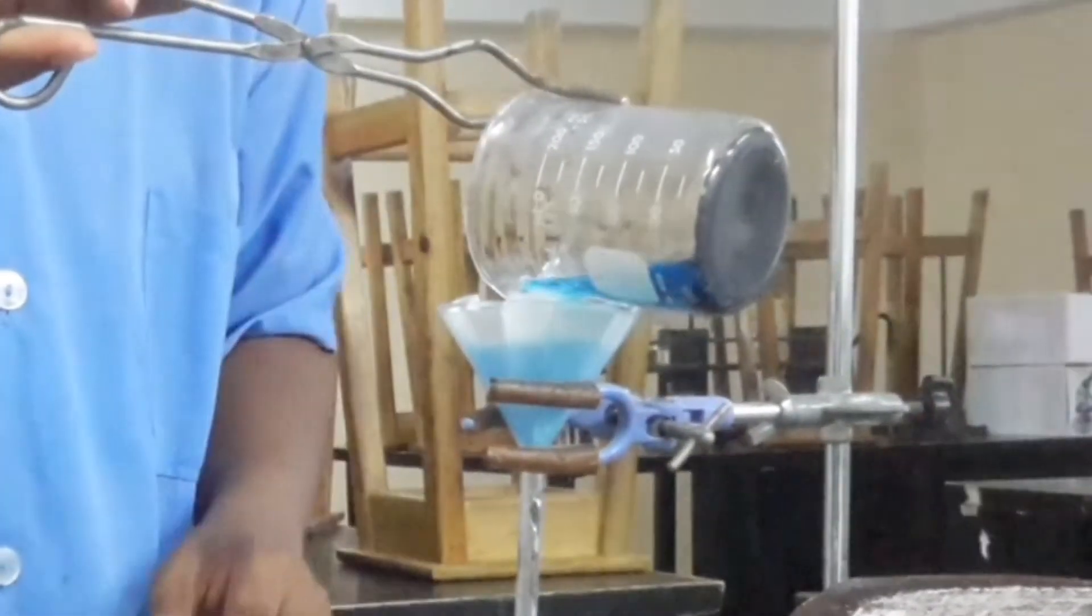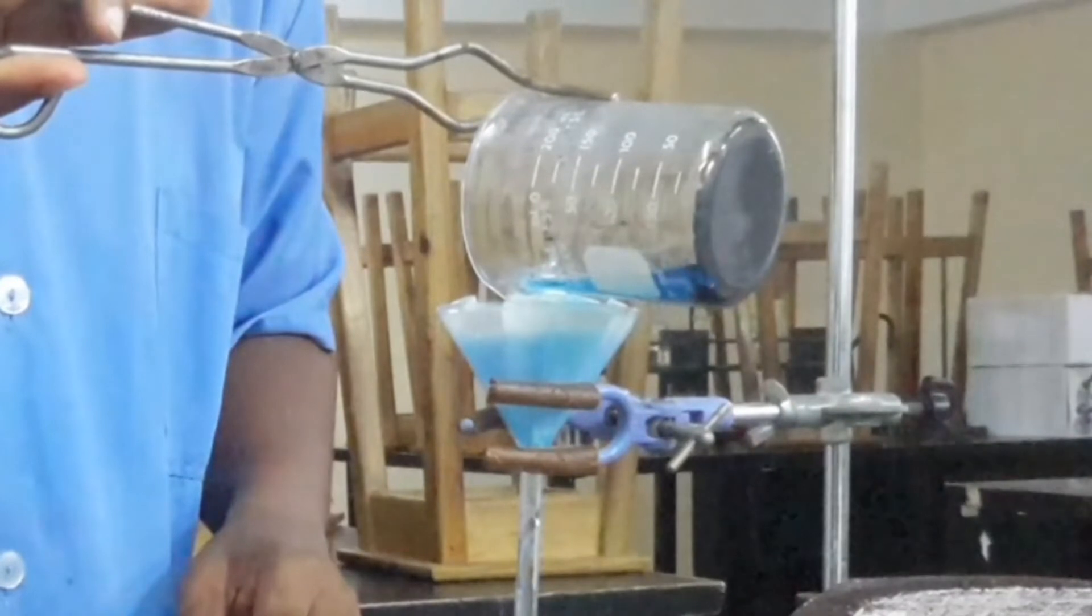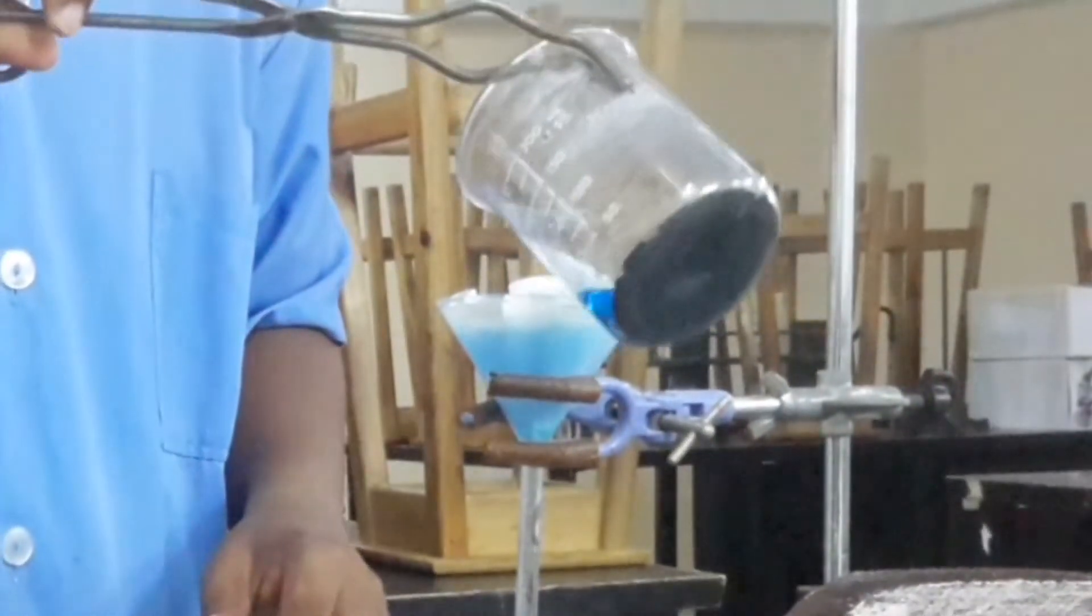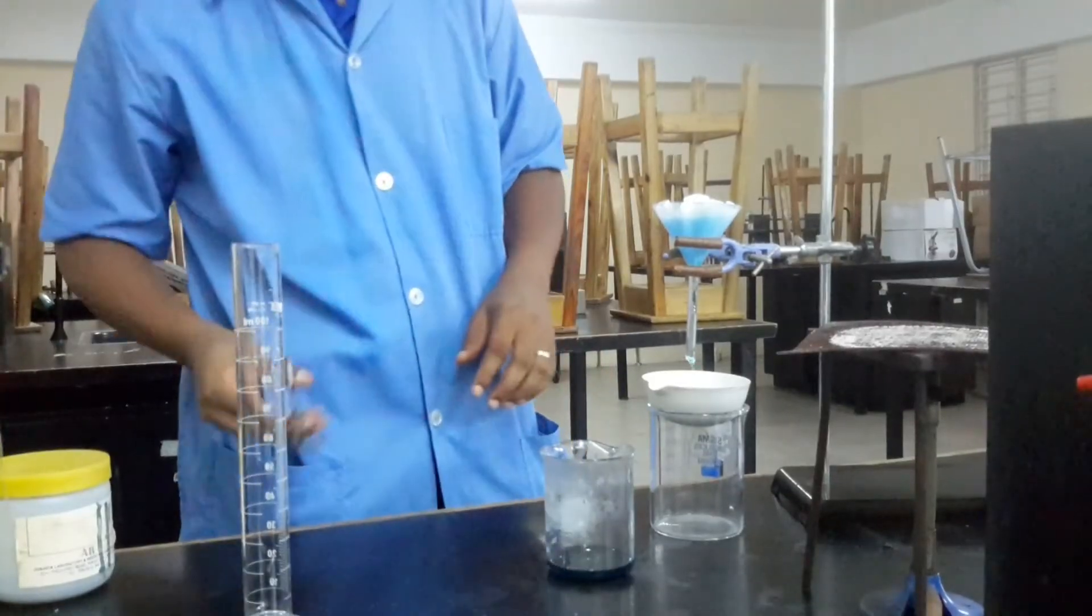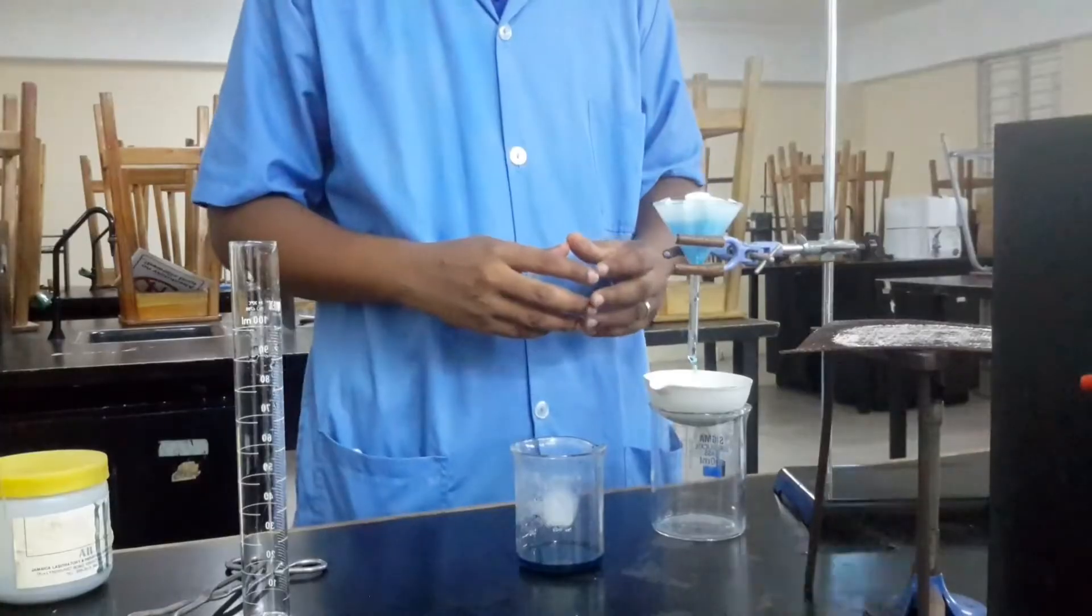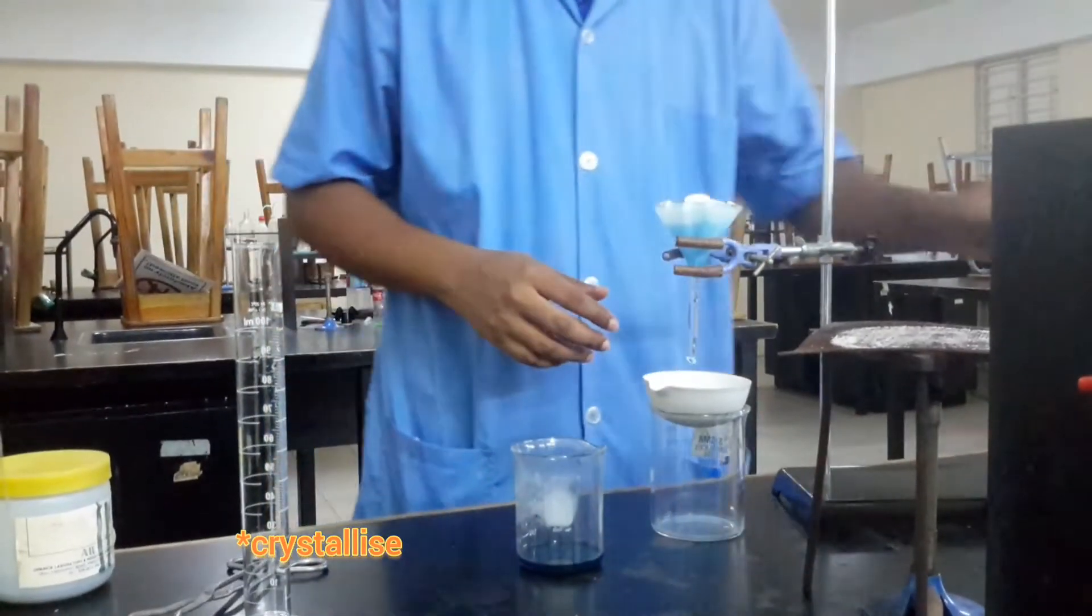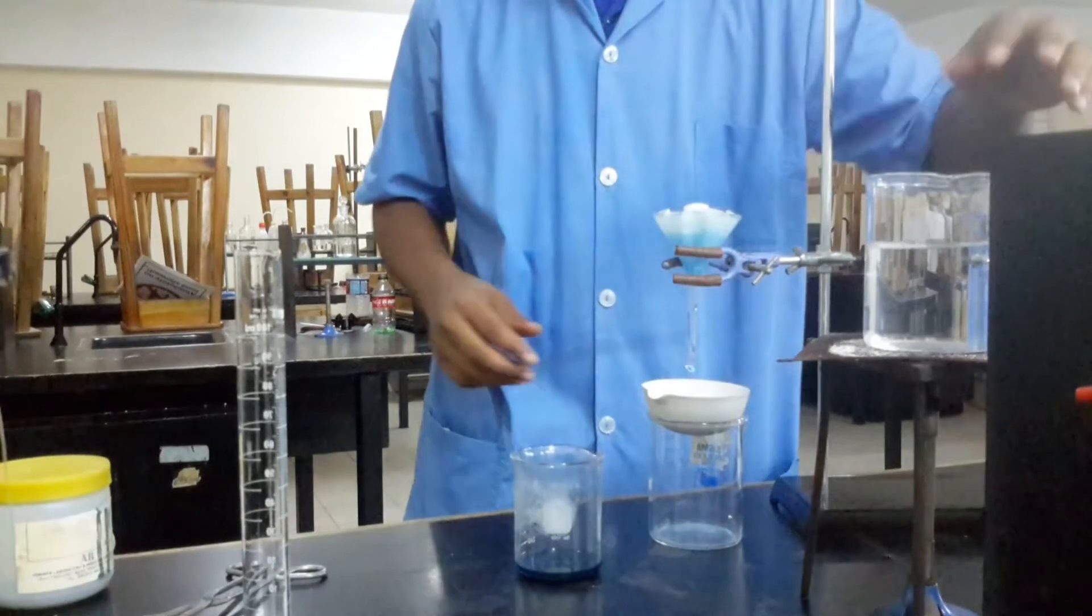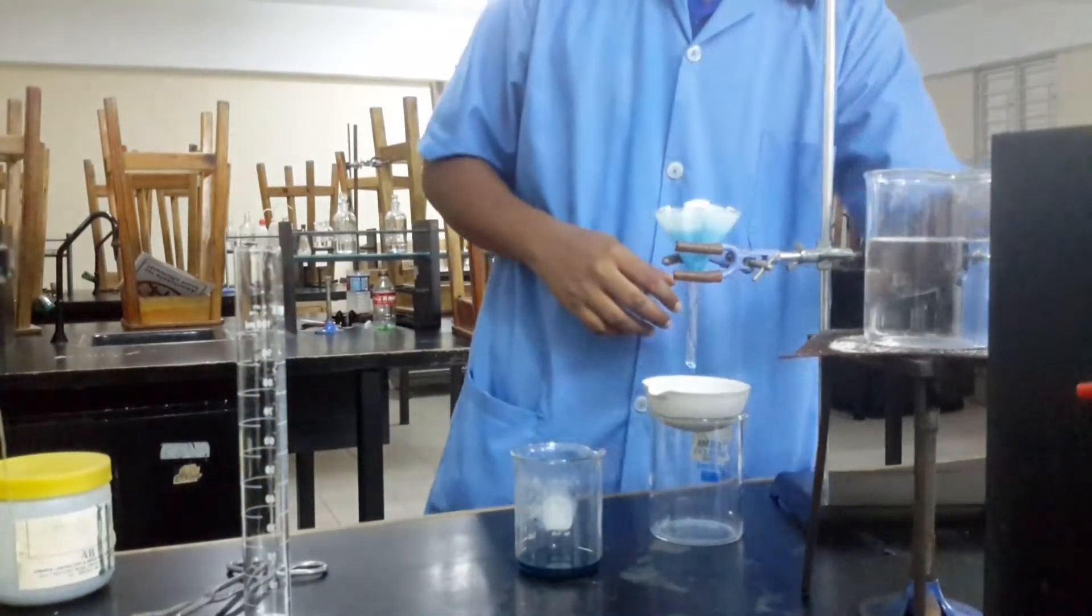We filter our mixture and we're having a blue solution coming out as the filtrate. Most of what would be the residue is in the bottom of this beaker. We'll just allow this to filter and then we will evaporate it.